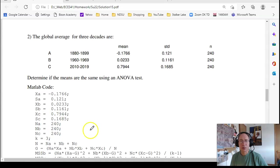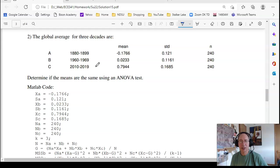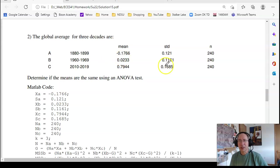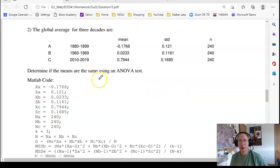Problem two: Look at the global average temperature for three decades. Here's what you have—the mean, standard deviation, number of data points. Repeat the analysis of variance. Is temperature changing over this time span?